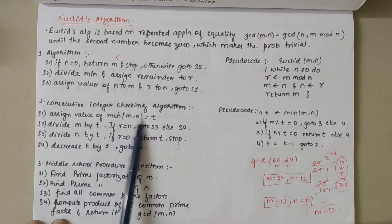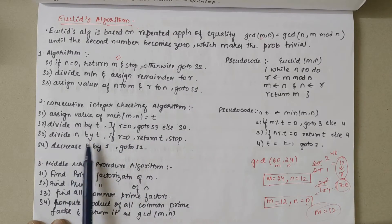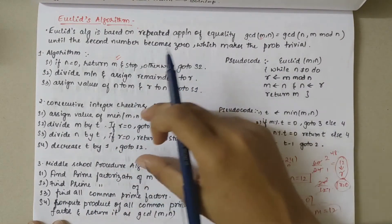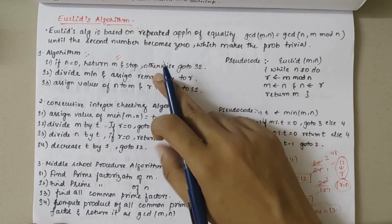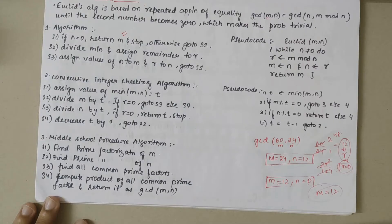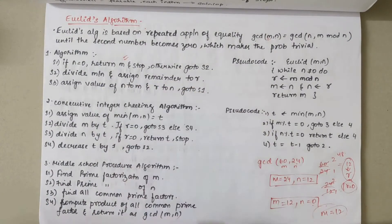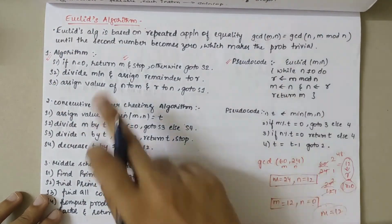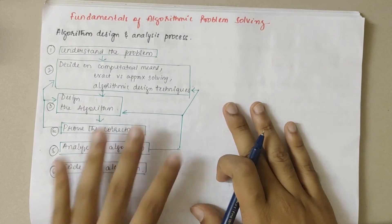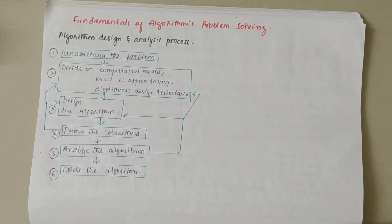Assign value of minimum of m comma n to t. Then divide m by t. If r equals zero, go to step three, or go to step four. Divide n by t. If r equals zero, return t and stop. Decrease t by one. This consecutive integer checking algorithm is an upgraded version of the initial algorithm. Then we have the middle school procedure algorithm: find prime factorization of m, prime factorization of n, find all common prime factors, compute product of all common prime factors and return it as GCD of m comma n. Understanding Euclid's algorithm in simpler terms, I would say go with this algorithm or this pseudocode.